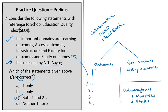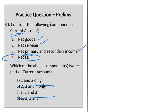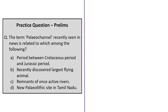The eighth question is about components of the current account. Net goods, net services, and net primary and secondary income are current account components. However, net foreign direct investment is a component of the capital account, not the current account. Therefore, the answer should not include number four, making the correct answer option C: 1, 2, and 3.